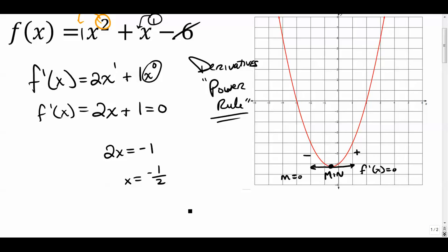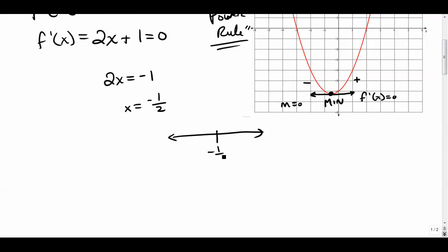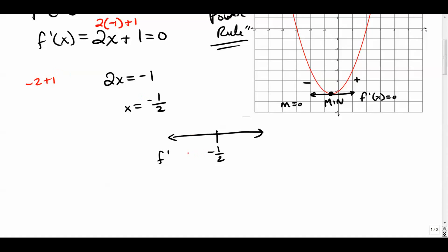Now let's do a first derivative test using a number line. Pick a number to the left of negative one-half — let's choose negative one — and plug it into the derivative: two times negative one plus one equals negative one. So to the left of this x value, the derivative is negative, meaning the function is going downhill.